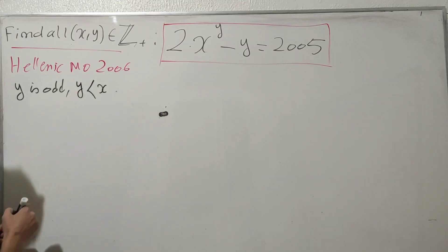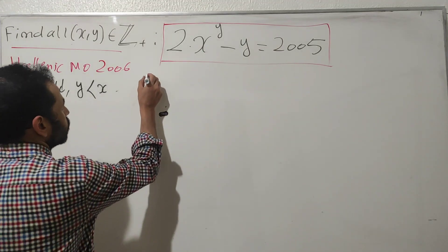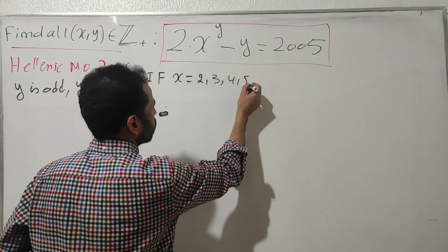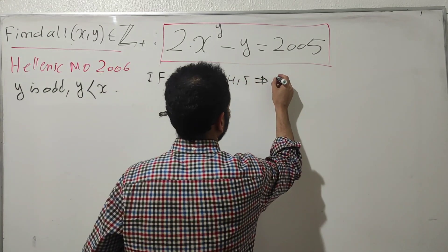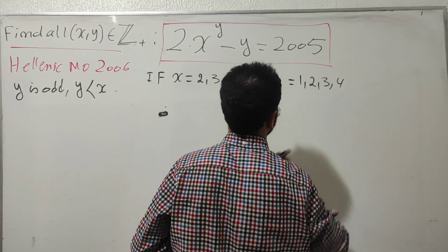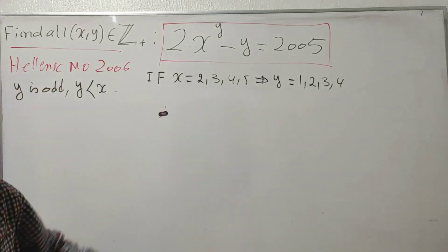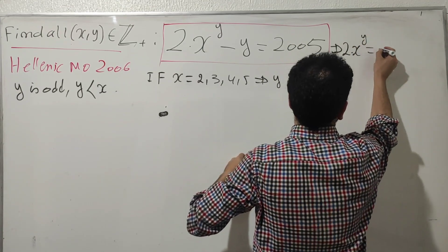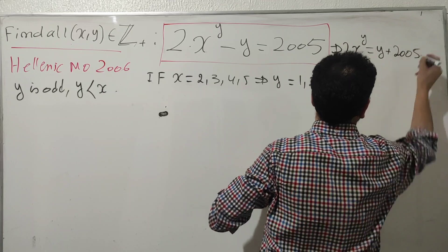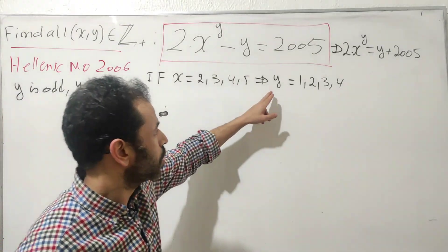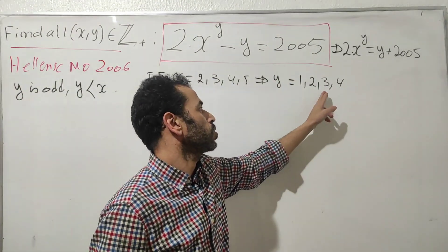This means y must always be smaller than x. On the other side, if x equals 2, 3, 4, or 5, then y is going to take values 1, 2, 3, or 4 — because x is bigger than y. So 2·x^y = y + 2005, and if x takes those small values, y takes values 1 through 4.